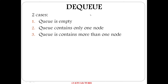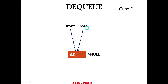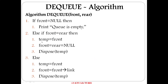The DeQueue algorithm is next. There are 3 cases: Case 1 — Queue is empty; Case 2 — Queue contains only one node; Case 3 — Queue contains more than one node. Front and rear are the arguments. If front equals null, it is Case 1 — Queue is empty, so display a message. If front equals rear, it is Case 2 — only a single node: set temp equal to that node, set front and rear to null, then dispose temp.